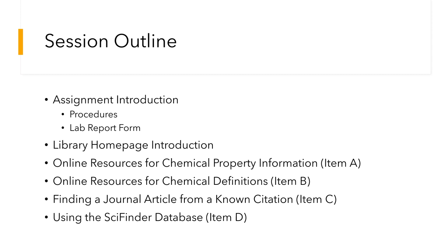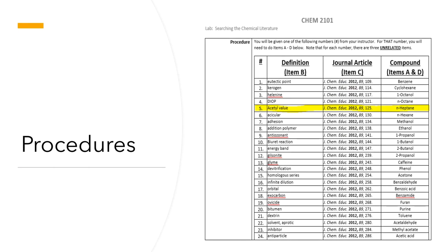You should have a copy of the assignment and a copy of the lab report form. Your instructor will assign each of you a number. You will use that number with the corresponding line number on the searching the chemical literature procedures. For example, if you were assigned the number 5, you'll use the information found in line number 5 of the assignment sheet to complete the required procedures. The procedures have three columns. Column 1 is a chemical term that you will need to define. This is item B in the procedures. In our example, line number 5 is acetyl value.